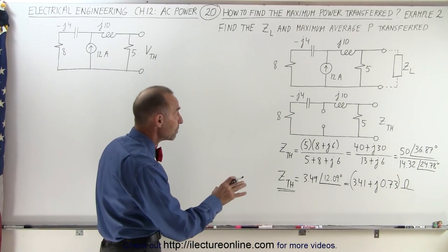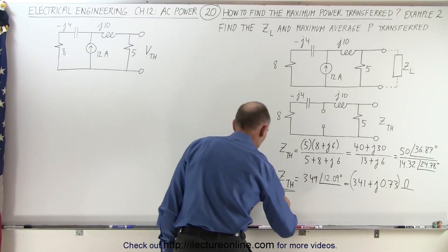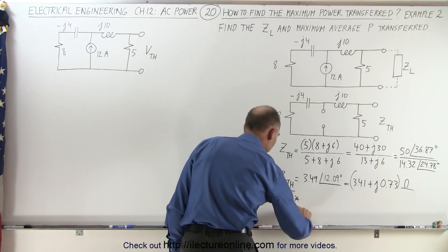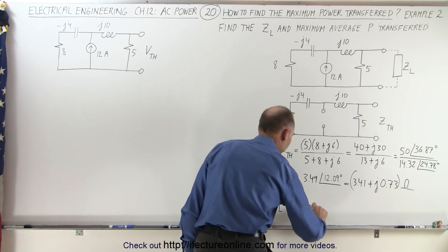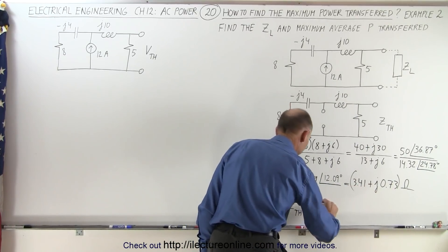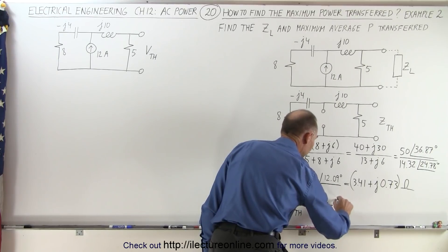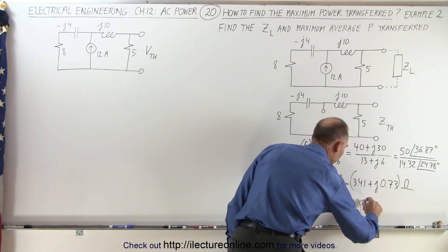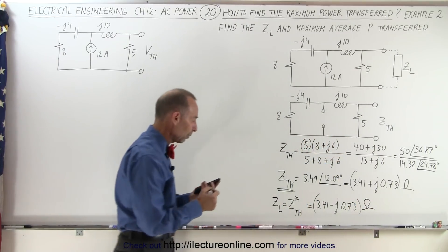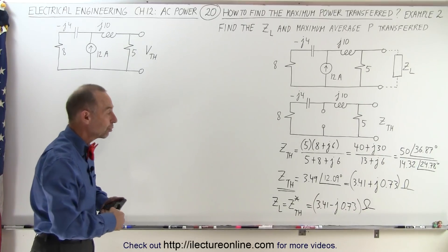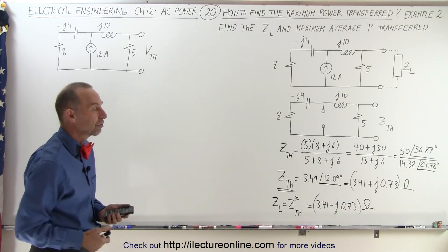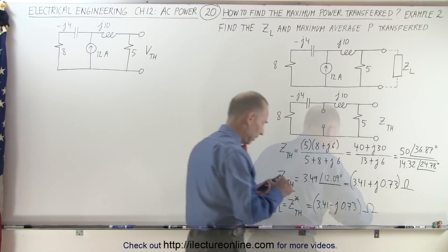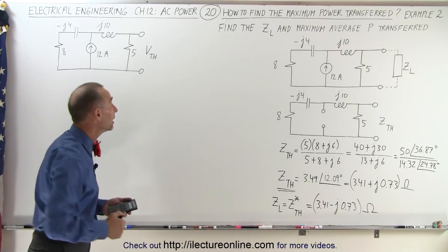Now we want to find the load impedance to get the maximum power transferred. We know that the load impedance Z_load is equal to the complex conjugate of the Thevenin impedance, which therefore will be 3.41 − j0.73 ohms. That is the load impedance which will allow the maximum average power transfer.